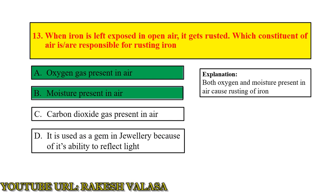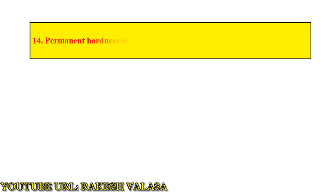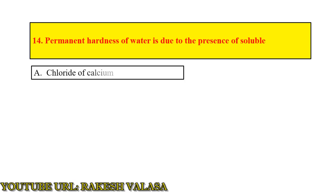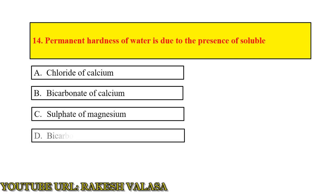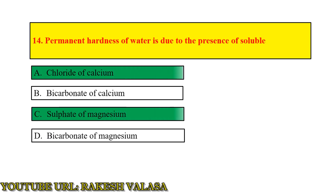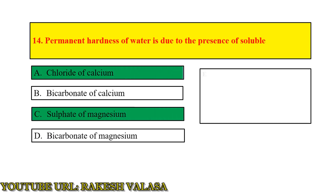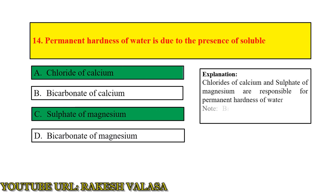Question number 14: permanent hardness of water is due to the presence of soluble — answer: chlorides of calcium and sulphates of magnesium. Explanation: chlorides of calcium and sulphates of magnesium are responsible for permanent hardness of water. Note: bicarbonates are responsible for temporary hardness of water.